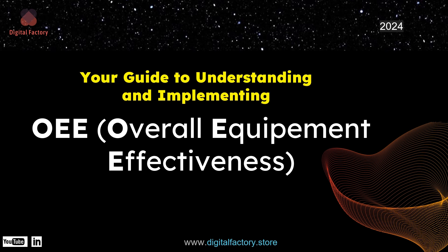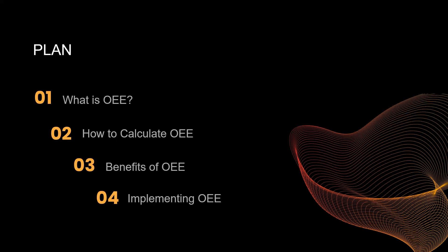Welcome to our guide on Overall Equipment Effectiveness, or OEE. This key performance indicator is an essential tool for Industry 4.0. Today, we're going to cover four main parts to give you a clear understanding of OEE.